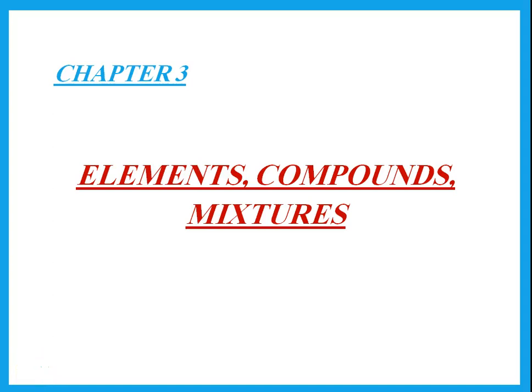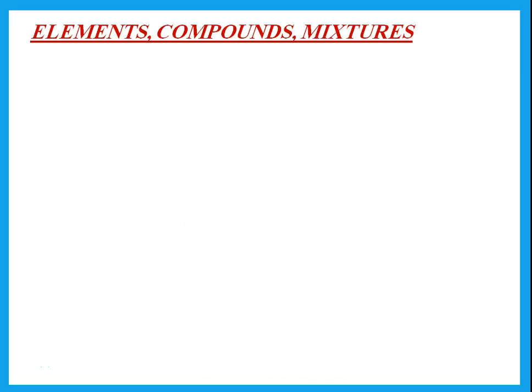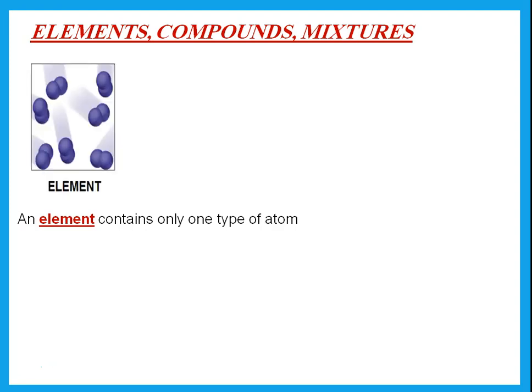Hello again. This is chapter 3, and in chapter 3 we're talking about elements, compounds, and mixtures. An element is a substance that contains only one type of atom, or identical atoms. Don't say it is one atom — it's one type. If you have an element, you have many atoms, but all of them are the same. You can say it's a substance that contains identical atoms, or one type of atom.